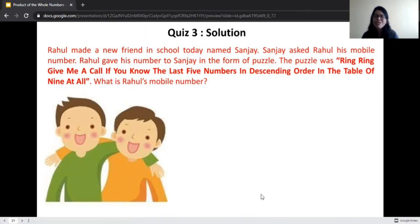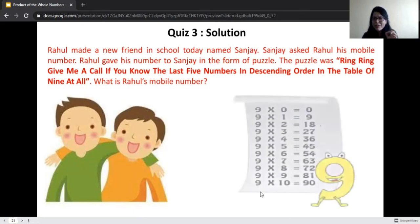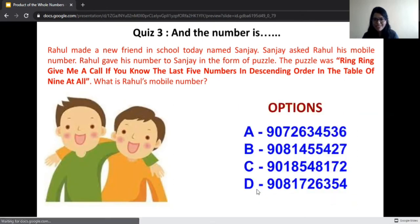Let us find the solution. The hint is in the table of nine. We have to find the last five digits and arrange them in descending order. Which are the last five digits? 9081726354. What is the mobile number? Correct. It is option D, that is 9081726354. Wasn't that interesting?